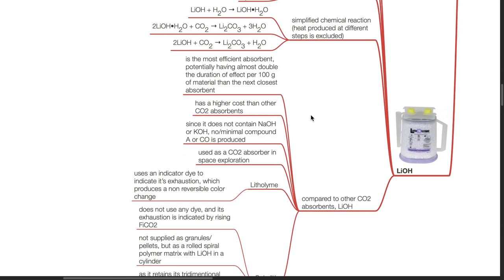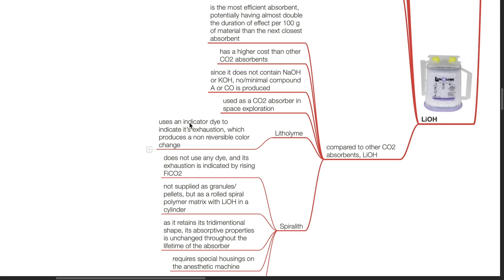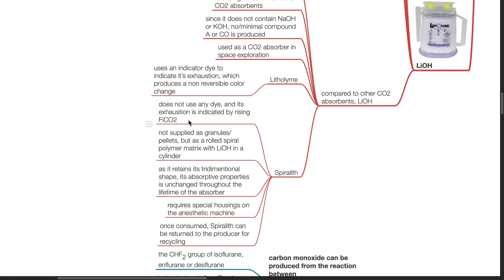Lithium hydroxide has a higher cost than other CO2 absorbents. Since it does not contain NaOH or KOH, no or minimal compound A or carbon monoxide is produced. Regarding Litholime: it uses an indicator dye to indicate exhaustion, producing a non-reversible color change. Regarding Spiralith: it does not use any dye and its exhaustion is indicated by rising FiCO2. It is not supplied as granules or pellets but as a rolled spiral polymer matrix with lithium hydroxide in a cylinder, retaining its tridimensional shape. Its absorptive capacity is unchanged throughout the lifetime of the absorber. Spiralith requires special housings on the anesthetic machine, and once consumed, it can be returned to the producer for recycling.